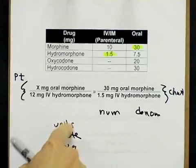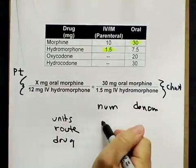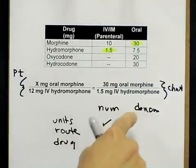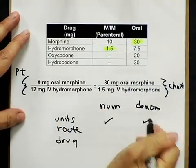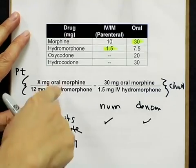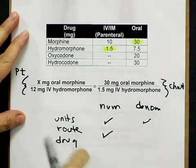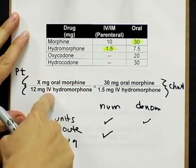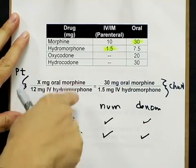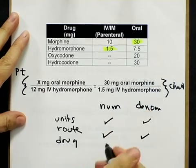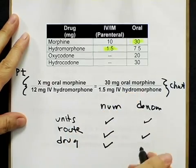Do the units match in the numerator? Milligram, milligram — yes. In the denominator? Milligram, milligram — yes. Does the route match? In the numerator, oral and oral — they match. In the denominator, IV and IV — they match. Do the drugs match? In the numerator, morphine and morphine — they match. In the denominator, hydromorphone and hydromorphone — correct.